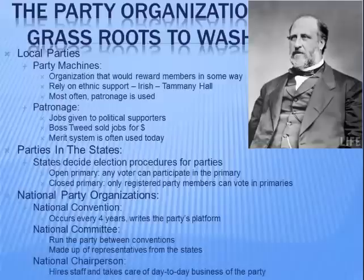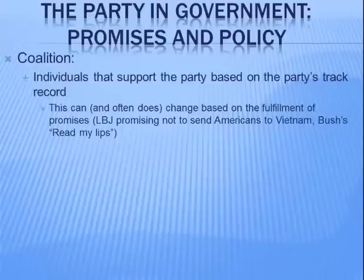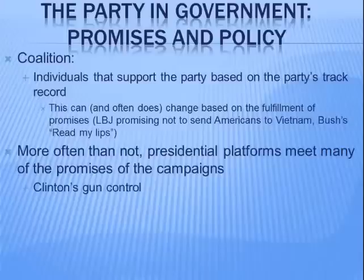A coalition is a group of individuals that support a party based on its track record, and this can change based on the fulfillment of promises. When LBJ said in 1964 he would not send Americans to Vietnam, there was one coalition; as involvement increased, that coalition shifted. Similarly, George H.W. Bush campaigned in 1988 saying 'read my lips, no new taxes' — when he broke that promise, his coalition shifted. More often than not, though, presidential platforms do meet many campaign promises, such as Clinton's Brady Bill gun control law and George W. Bush's 2001–2002 tax cuts.